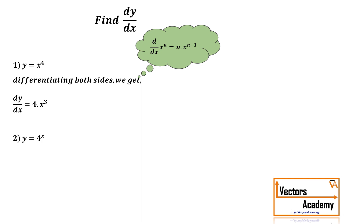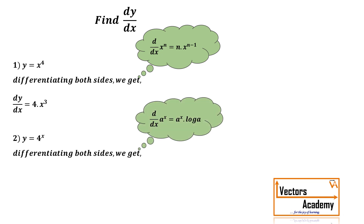Now consider another function y is equal to 4 raised to x. In the previous question there was a function raised to a number, and in this question it's a number raised to a function. The formula used will be the derivative of a raised to x, so the answer for dy by dx is 4 raised to x log 4.